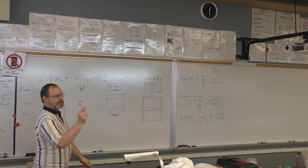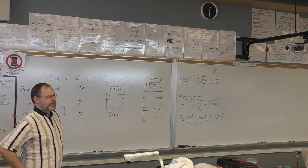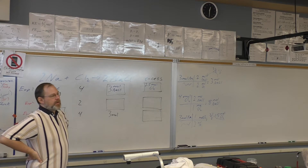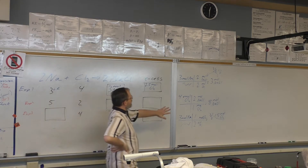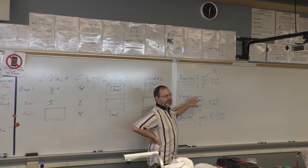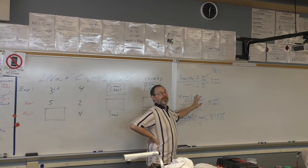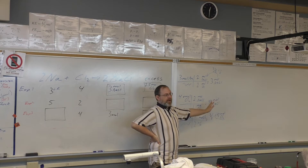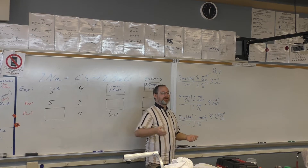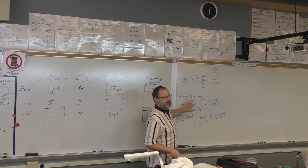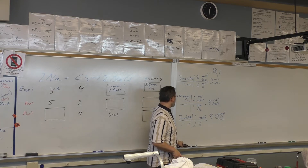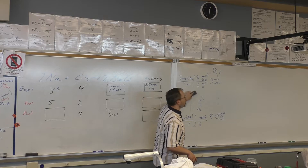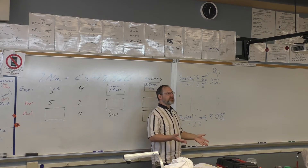Student question: could we have done eight minus three to get the excess? No — the equation for the wrong reactant should be ignored. Once you figure out which one is the limiting reactant, basically just remove the other equation. When you know it doesn't matter, get rid of it.